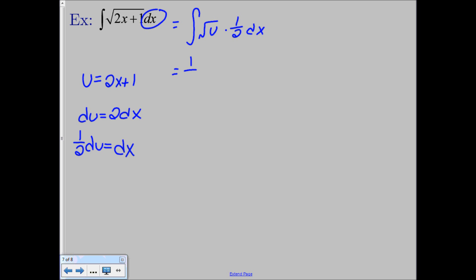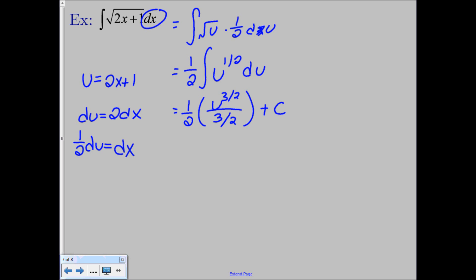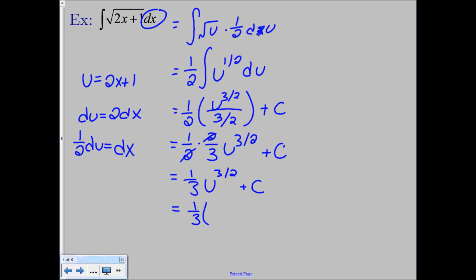Pull that 1 half out using the constant rule, and rewrite the square root as u to the 1 half du. Then we have 1 half times u to the 3 halves over 3 halves, plus c. That's 1 half times 2 thirds u to the 3 halves — flipping that fraction up from the denominator. The 2s cancel, so we get 1 third u to the 3 halves plus c. Now substitute back in for u: our final answer is 1 third times 2x plus 1 to the 3 halves power, plus c.